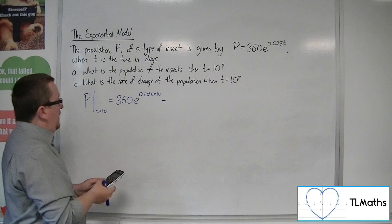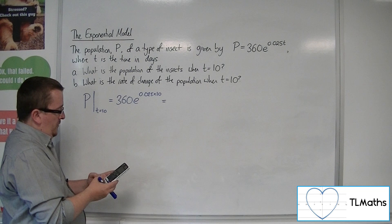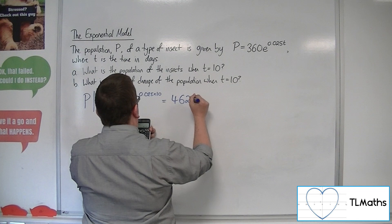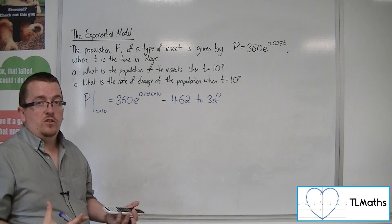So 360 times e to the 0.025 times 10 is 462 to 3 significant figures, to the nearest whole number.